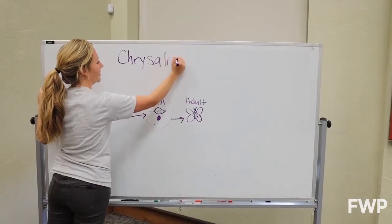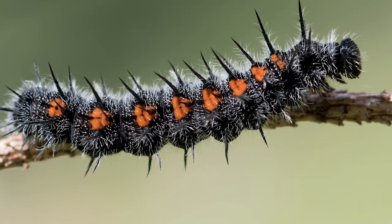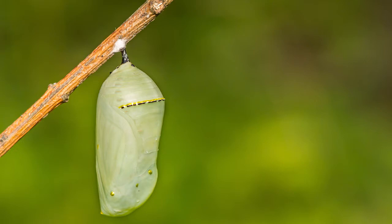Now let's define a chrysalis. Chrysalis is a term that is used specifically for a butterfly pupa. Butterfly caterpillars will usually hang their chrysalis from a leaf or a twig.